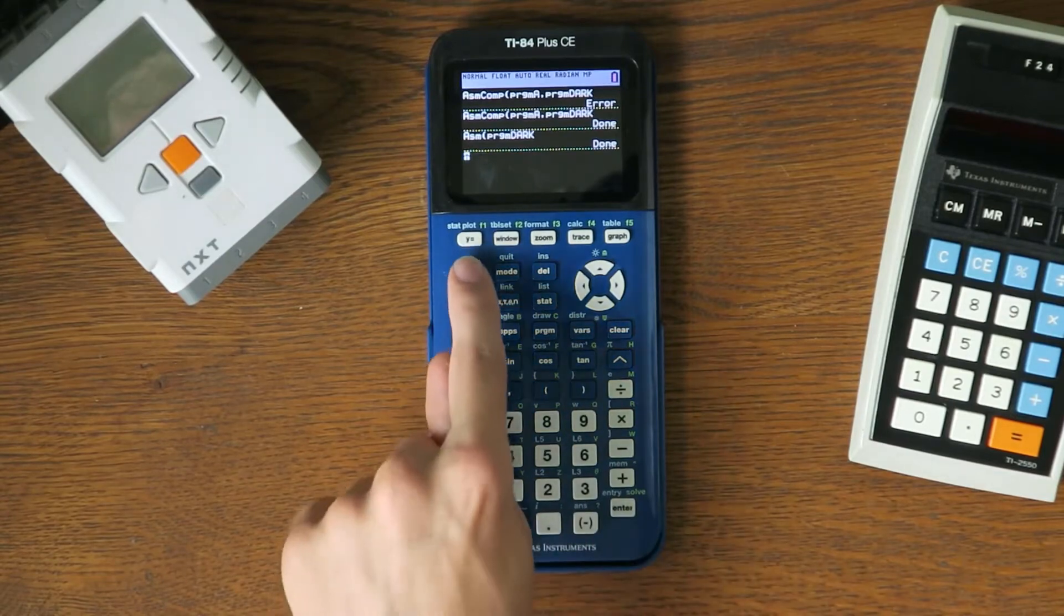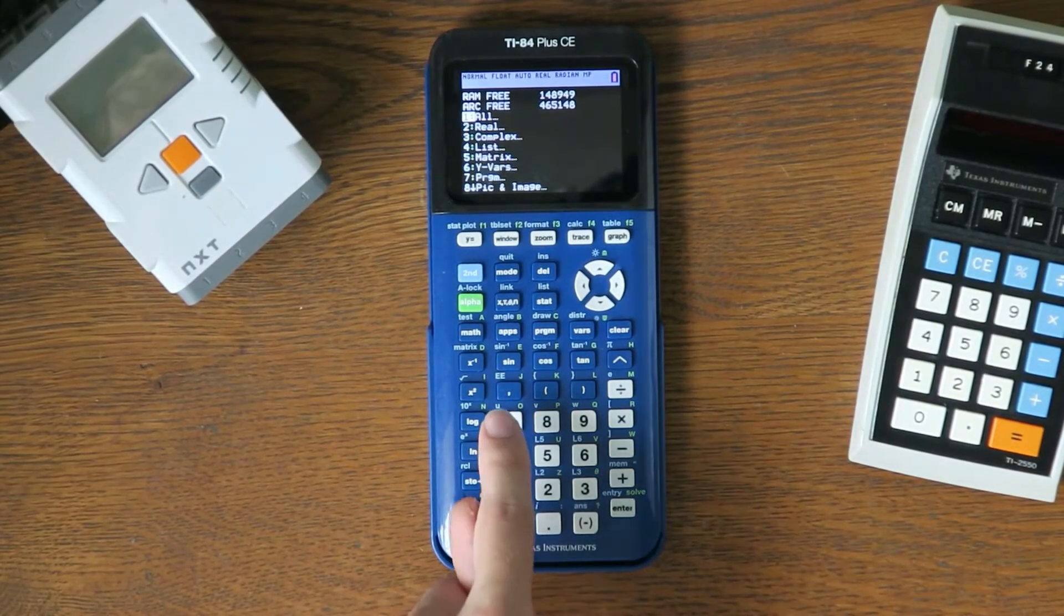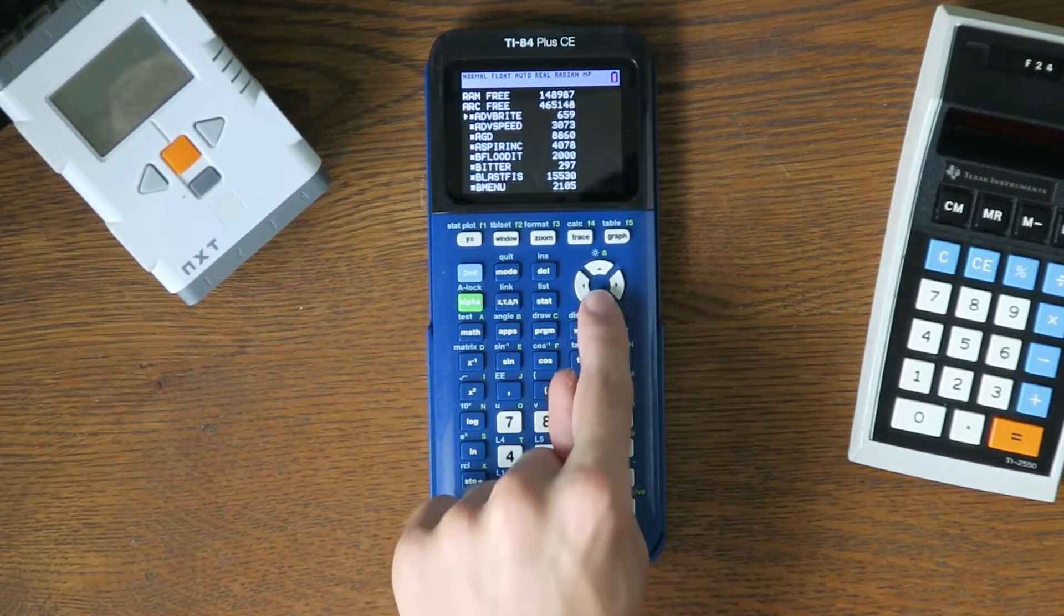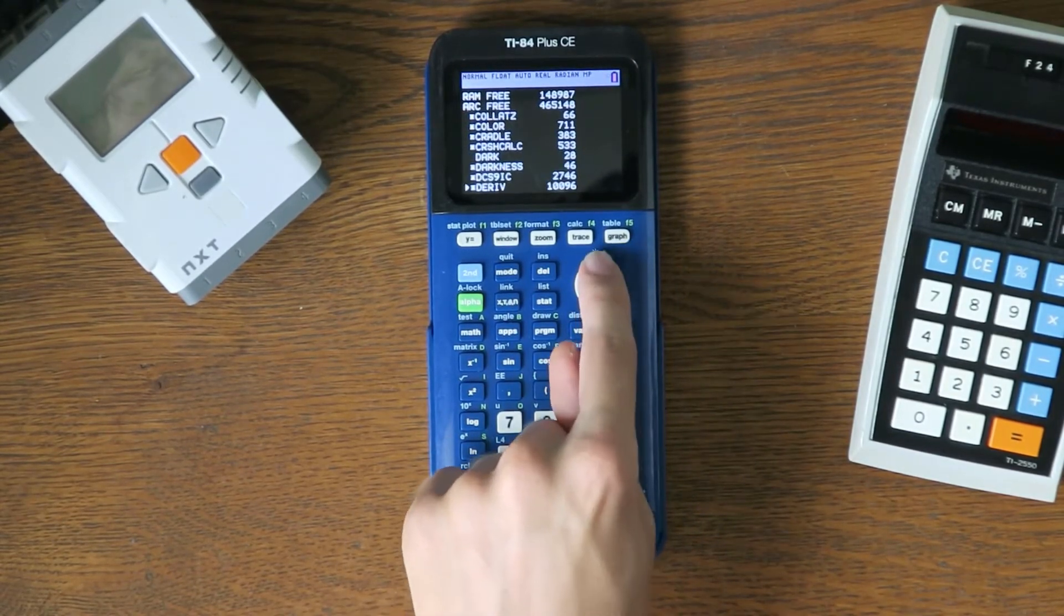If the program successfully runs, then you can go to the memory management screen and delete program A. If you have OS 5.3.0, then you can archive program dark so it won't get lost after a RAM reset.